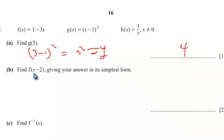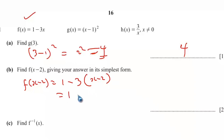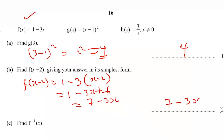Part B: find f(x minus 2), giving your answer in the simplest form. f(x minus 2) equals 1 minus 3(x minus 2) equals 1 minus 3x plus 6 equals 7 minus 3x.